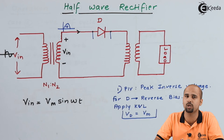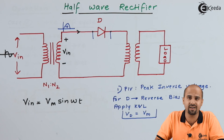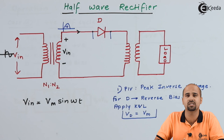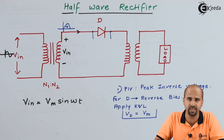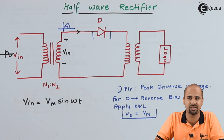So far we have discussed rectification, which is AC to DC conversion, but a rectifier cannot convert complete AC into pure DC. That is why we say the rectifier converts an AC signal into a pulsating DC signal. We have now learned the half wave rectifier. In upcoming videos we will learn the full wave rectifier, bridge rectifier, and types of filters as well. Stay tuned, and please like, share, comment, and subscribe to the Ikeda channel.